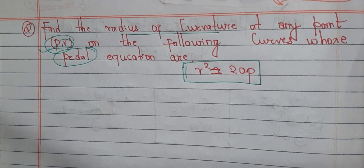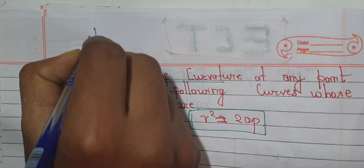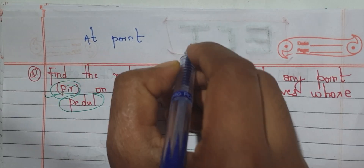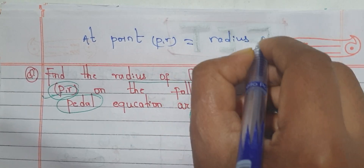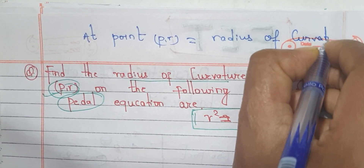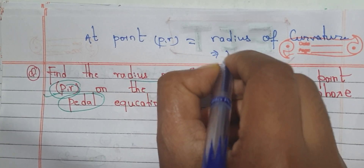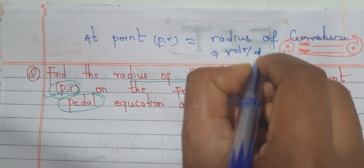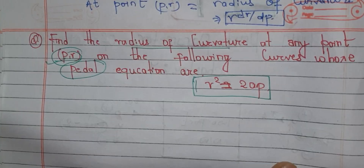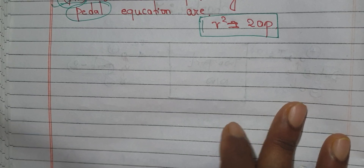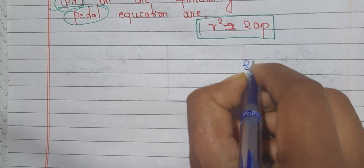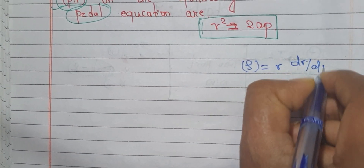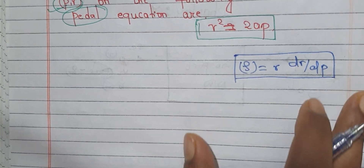The formula or concept: at point P, the radius of curvature equals r·dr/dp. This is the formula I am going to use. I am going to write this as: radius of curvature equals r·dr/dp.